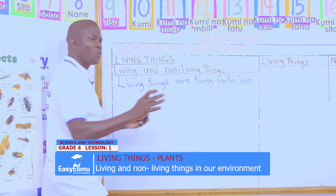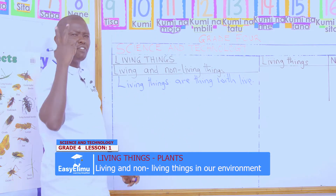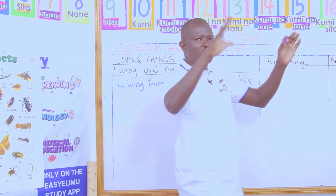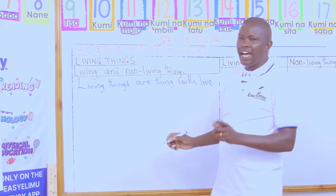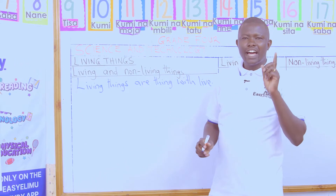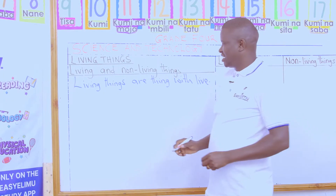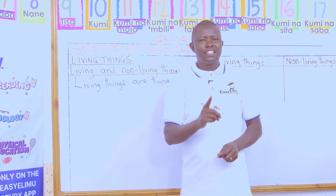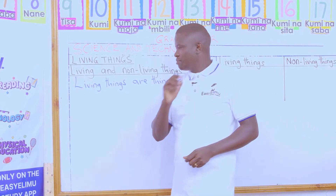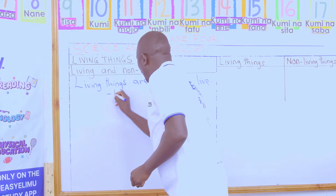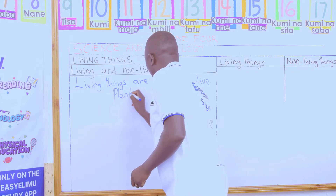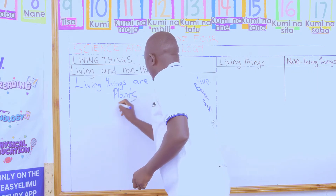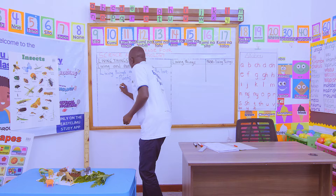In this whole world, we only have two living beings that were created by God — these are plants and animals. Repeat again: plants and animals. So I'll write: plants are living things, and animals. These are two living things.